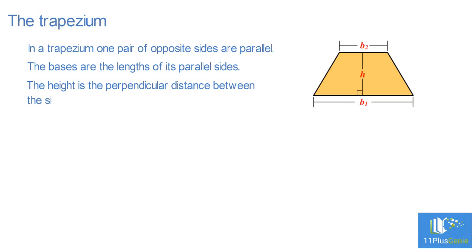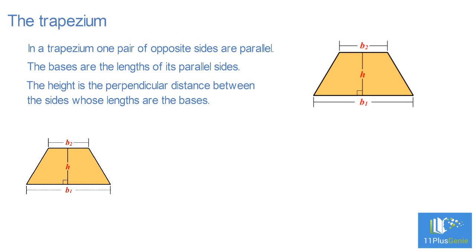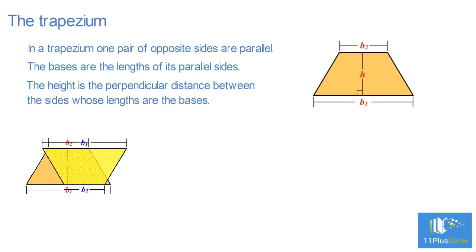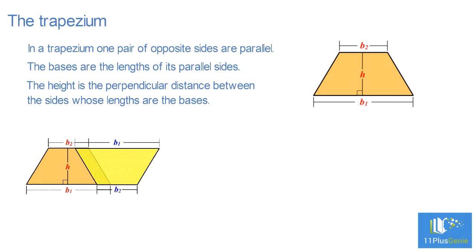The bases are the lengths of its parallel sides. The height is the perpendicular distance between the sides whose lengths are the bases. Start with any trapezium, duplicate it to form an identical trapezium, flip this trapezium upside down, and fit it to the other end of the first trapezium.